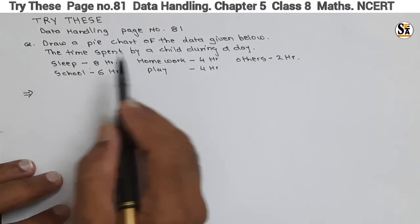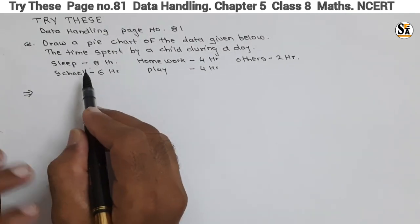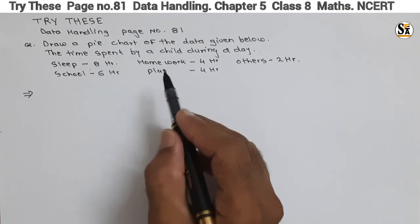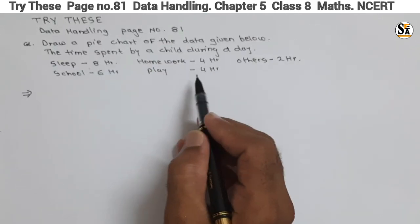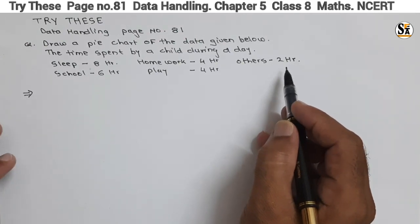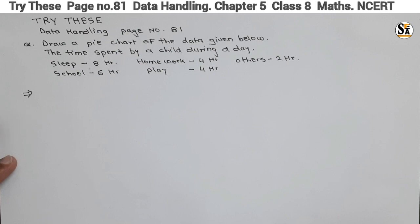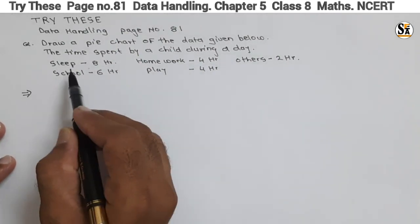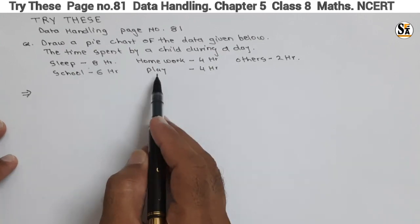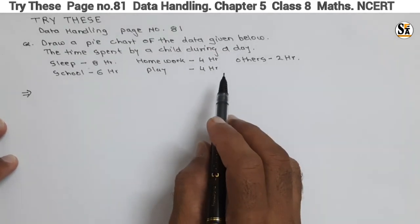The data given is the time spent by a child during a day. Sleep: 8 hours, School: 6 hours, Homework: 4 hours, Play: 4 hours, and Others: 2 hours. That means out of 24 hours in a day, the child is spending time for sleep, school, homework, play, and others. With the help of this data, we have to draw a pie chart.